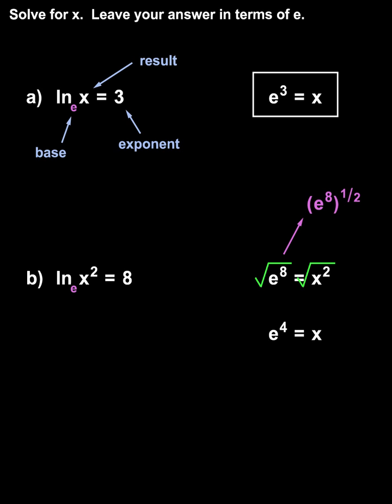Also, remember that when we take the square root of both sides of an equation, we use plus or minus. So, our final answer is plus or minus e to the fourth equals x.